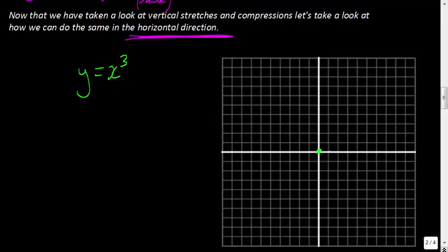If you put in 1, 1³ = 1. If you put in 2, 2³ = 8. If you put in 3, 3³ = 27, but you can't fit that on our graph.